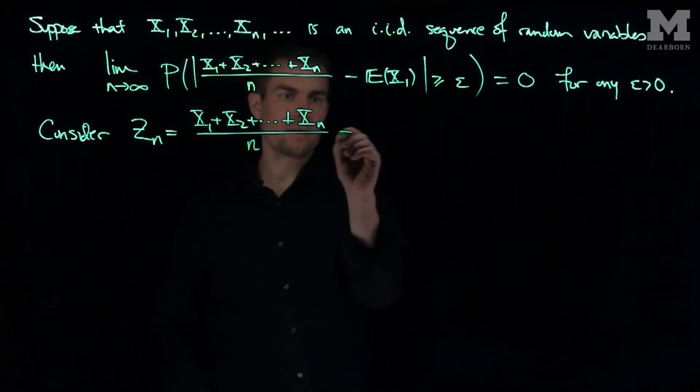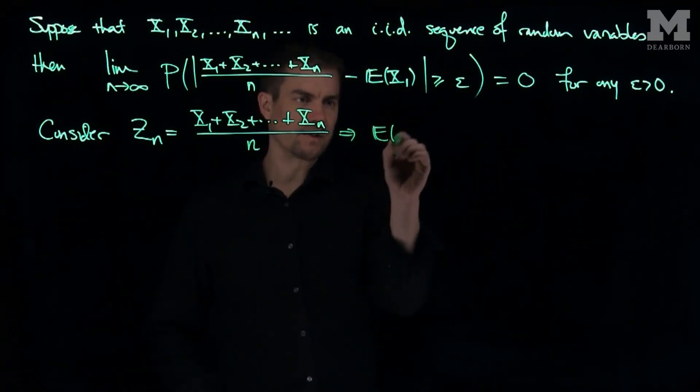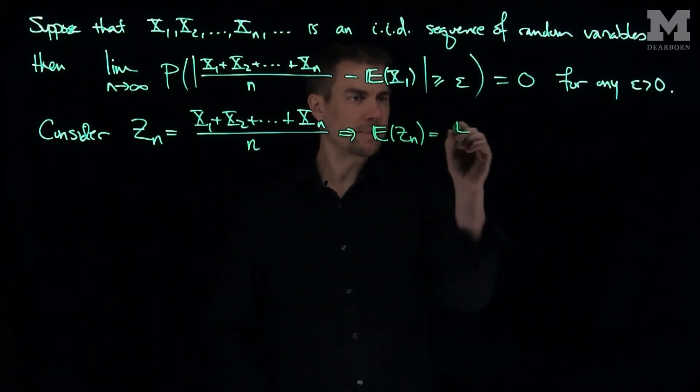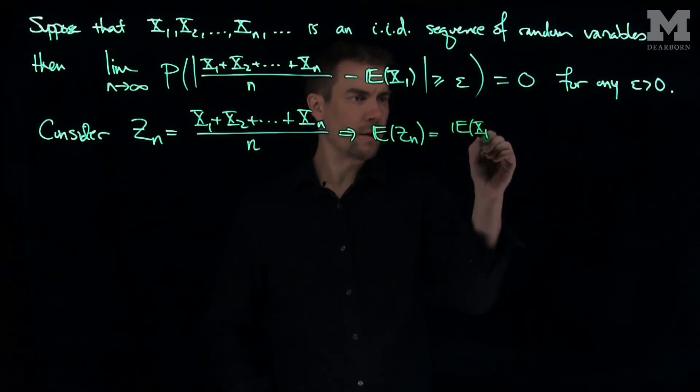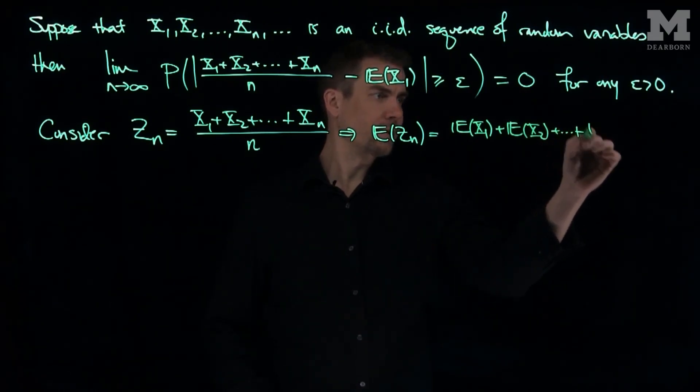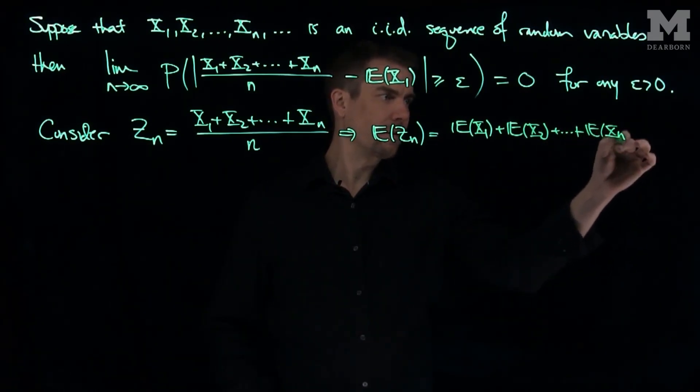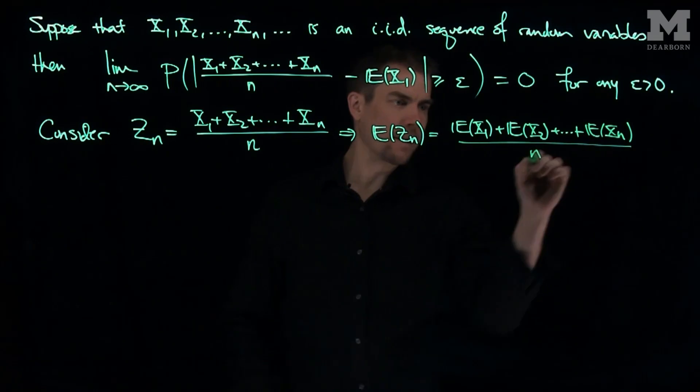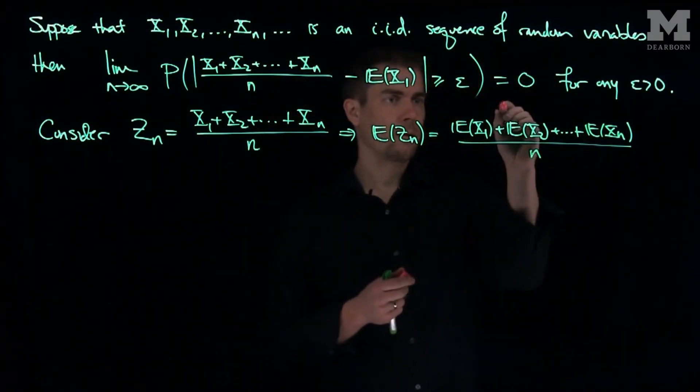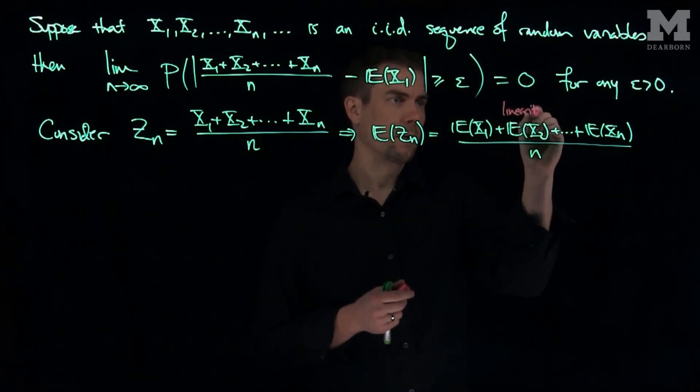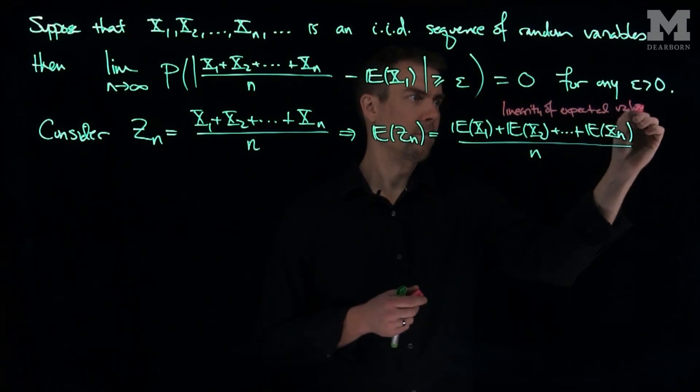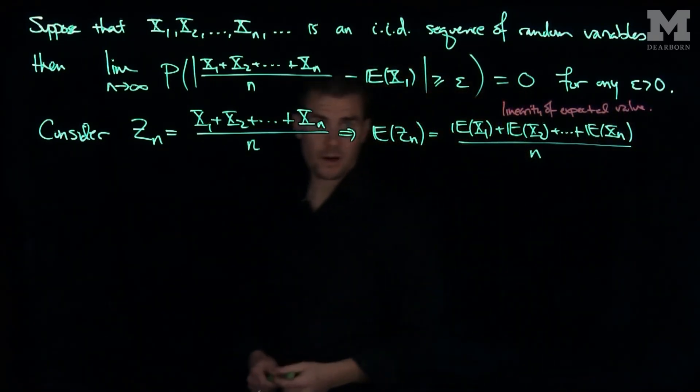And so what's the expected value of zn? The expected value of zn is going to be the expected value of x1, plus the expected value of x2, plus the expected value of xn, divided by n by the linearity of the expected value. So this follows from the linearity of expected value.